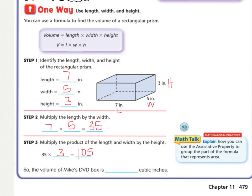So 35 times 3 is 105, but I can't just give a number, what's my label? We measured in inches, and because it's volume, and we multiplied 3 dimensions, it needs to be cubed. So the volume of Mike's DVD box is 105 cubic inches, which they wrote out the word cubic, but you could have also just done IN with a third, exponent 3.